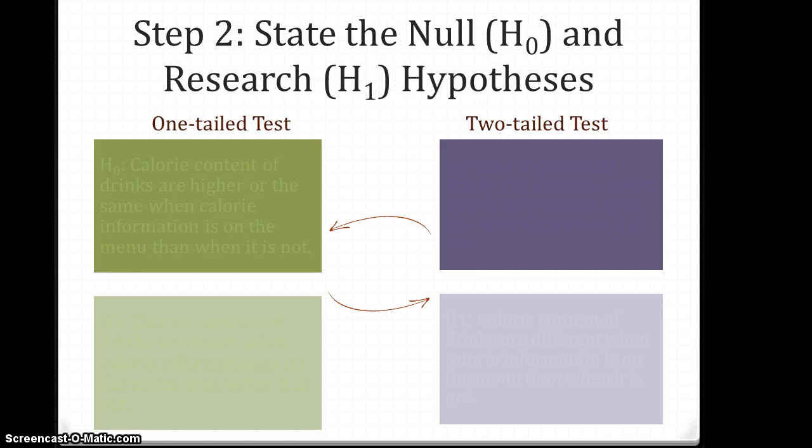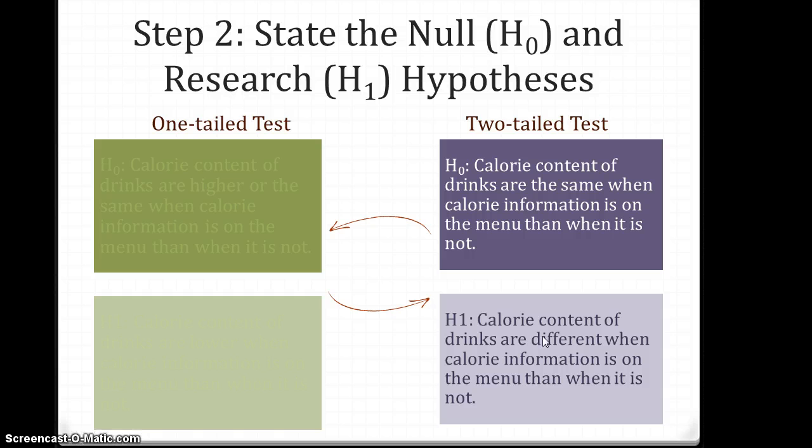With the two-tailed test, what we saw was that the calorie content of drinks are the same when calorie information is on the menu than when it is not for the null hypothesis, and that they're different when there is calorie content on the menu.